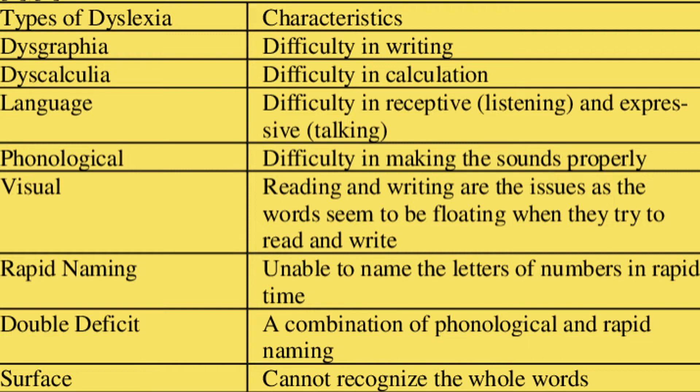Other types include language difficulty — both receptive (listening) and expressive (talking) problems — and phonological, which is difficulty in making sounds properly. There is also visual, where reading and writing are issues as words seem to be floating when they try to read or write, making it hard to visualize words or make sounds from them. Rapid naming means being unable to name letters or numbers quickly. Double deficit is a combination of phonological and rapid naming difficulties. Finally, surface dyslexia is where a child cannot recognize the whole word.